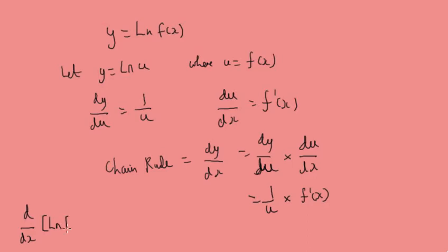which is 1 over u times the derivative of x. So the general rule is the derivative of the log of some function would be f dashed of x over f of x. So in general, the derivative of the log of some function like ax plus b would be the derivative, which is a, over ax plus b, that function.